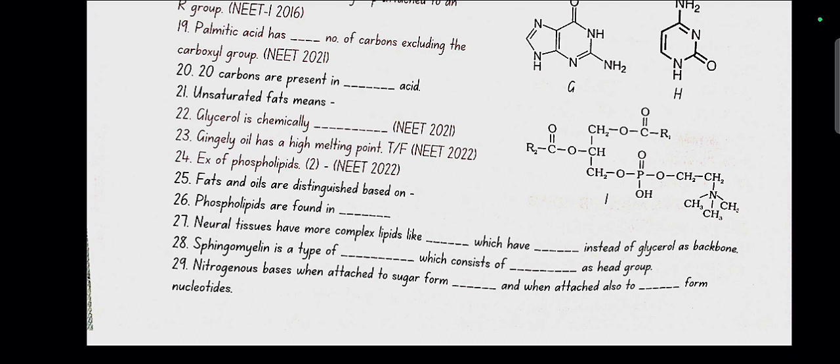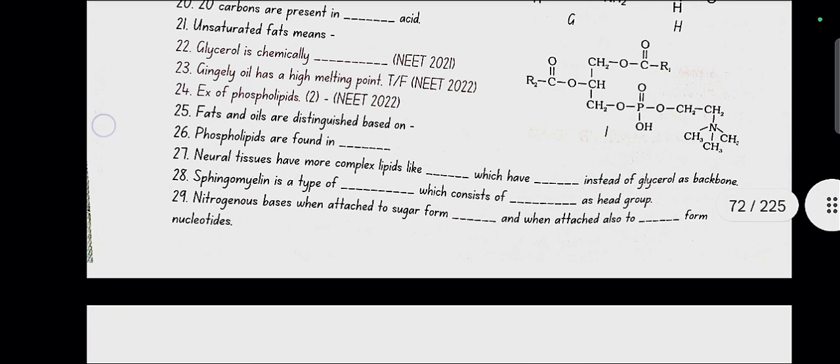Fats and oils are distinguished based on melting point. Phospholipids are found in cell membrane. Neural tissues have more complex lipids like sphingolipids which have sphingosine instead of glycerol as a backbone. Sphingomyelin is a type of sphingolipid which consists of phosphodylethanolamine as a head group.